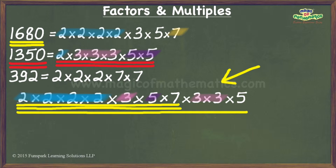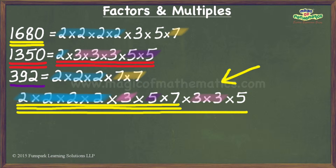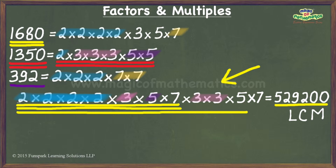We now turn our attention to the third number, namely 392. Following the same logic, if we add the required number of 2s and 7s to our product to make it a multiple of 392 as well, we would get the LCM of 1680, 1350 and 392. It turns out our product already contains sufficient 2s, and we need to add only one more 7. The product now evaluates to 529200, which is the LCM of the three numbers.